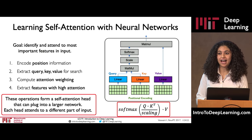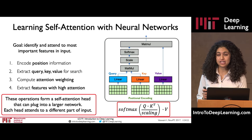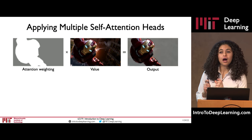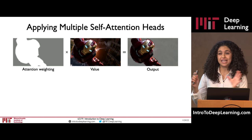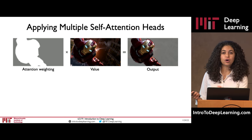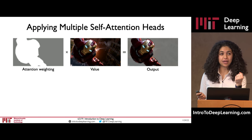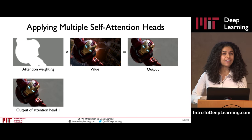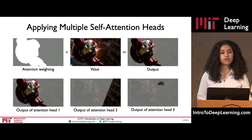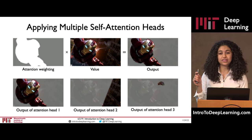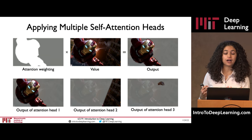We can do this multiple times — we can have multiple individual attention heads. In the Iron Man example, one head is attending to Iron Man himself, but we can have independent attention heads that pay attention to different things in our input — for example, a background building, or a little region which is actually an alien spaceship coming at Iron Man from the back.